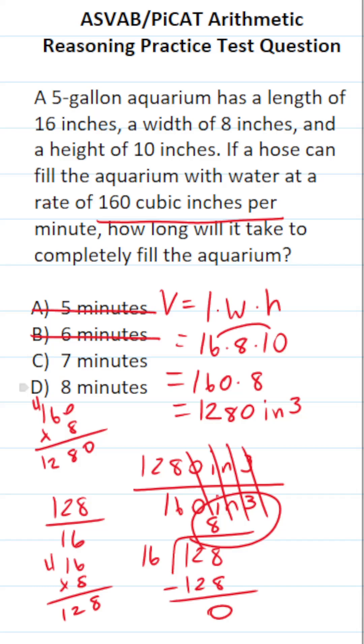So 16 times 8 is exactly 128 with no remainder. In other words, it's going to take the hose 8 minutes to fill the aquarium if it fills it at a rate of 160 cubic inches per minute. So this one is D, of course.